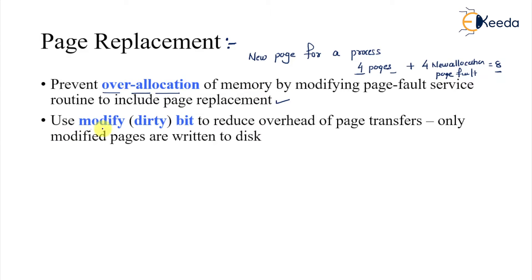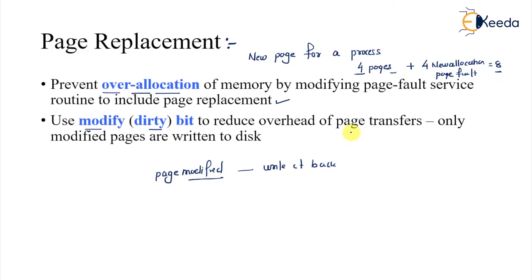We use a modified or dirty bit — there is one bit that is set. The dirty bit, from previous memory management discussion, indicates whether the page has been modified or not. If it is modified, we write it back. If it is not modified, we simply discard that page. Only modified pages will be written back, and that really reduces the overhead.